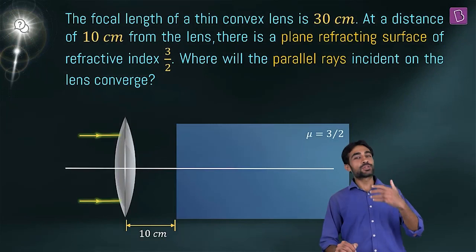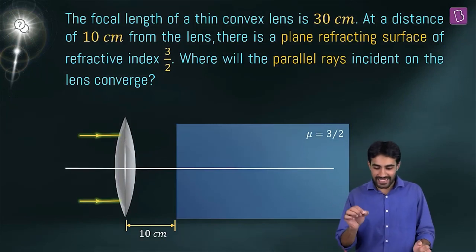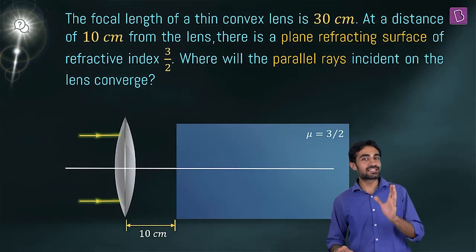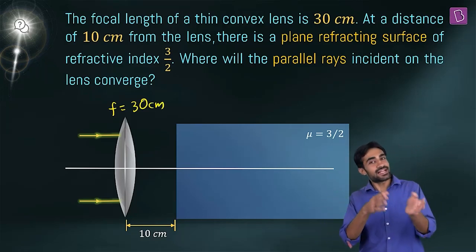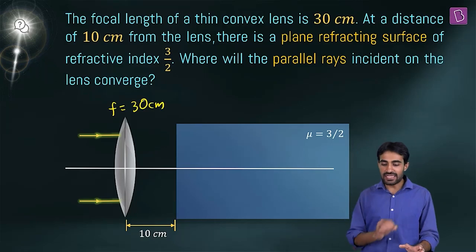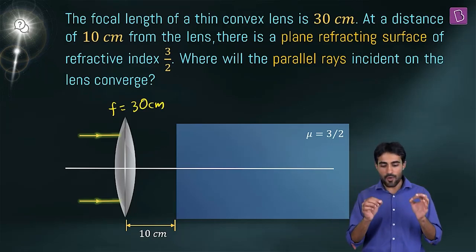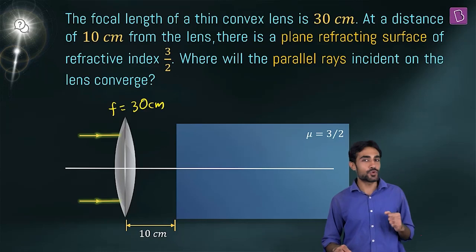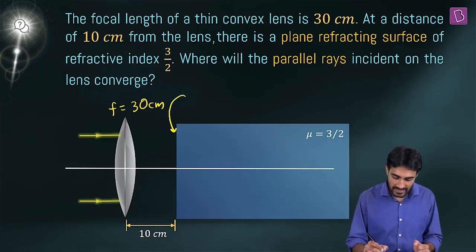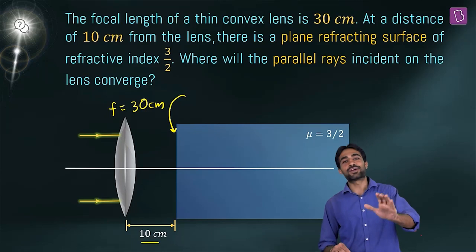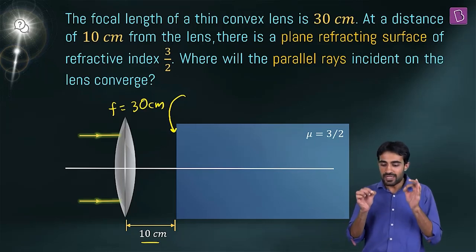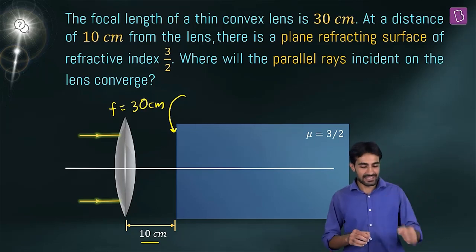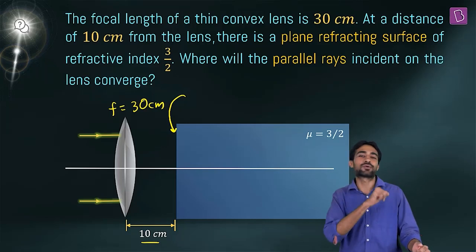The focal length of a thin convex lens is 30 cm. At a distance of 10 cm from the lens, there is a plain refracting surface of refractive index 3/2. Where will parallel rays incident on the lens actually converge? Without the refracting surface, these rays would converge at the focus.